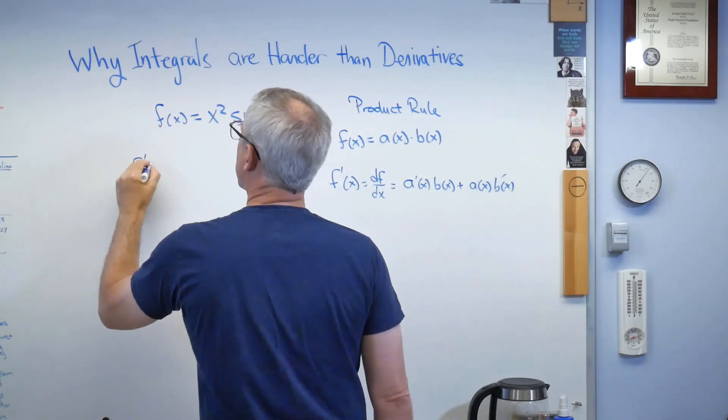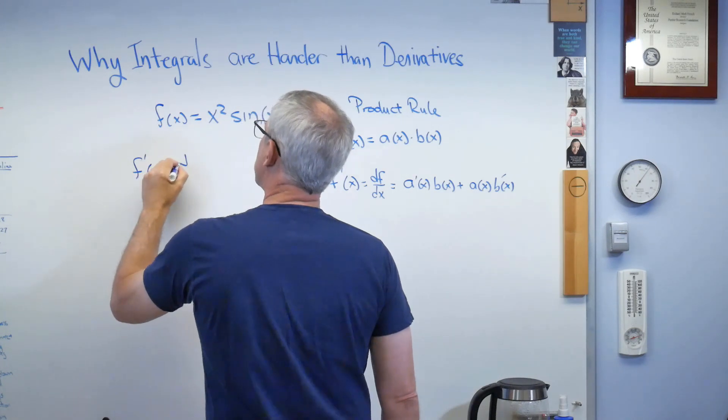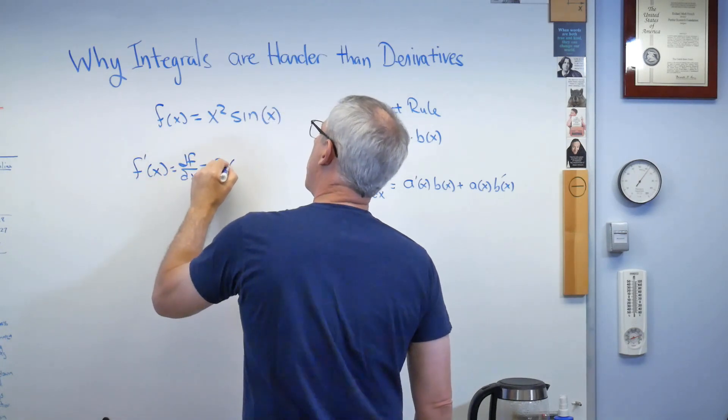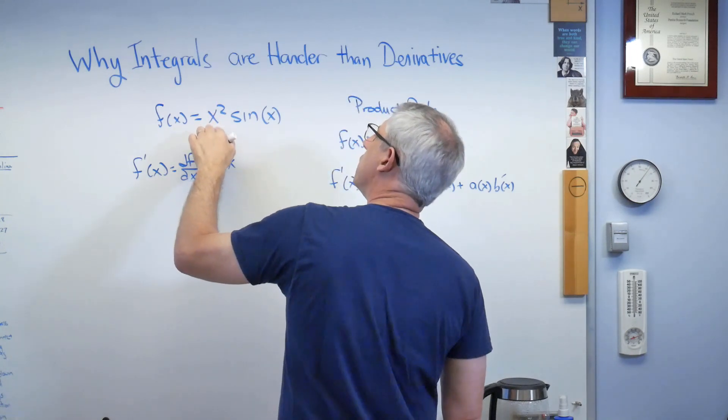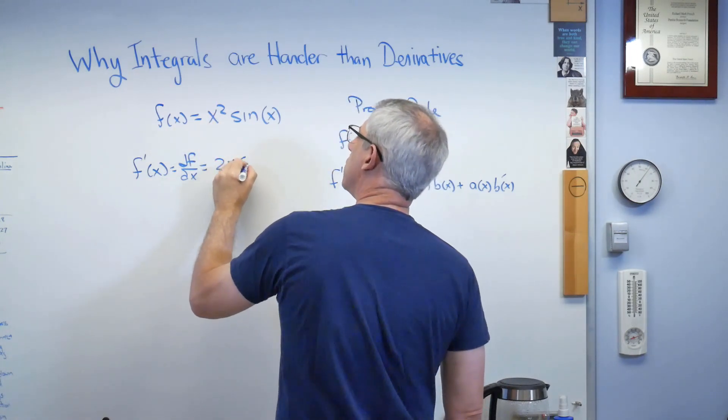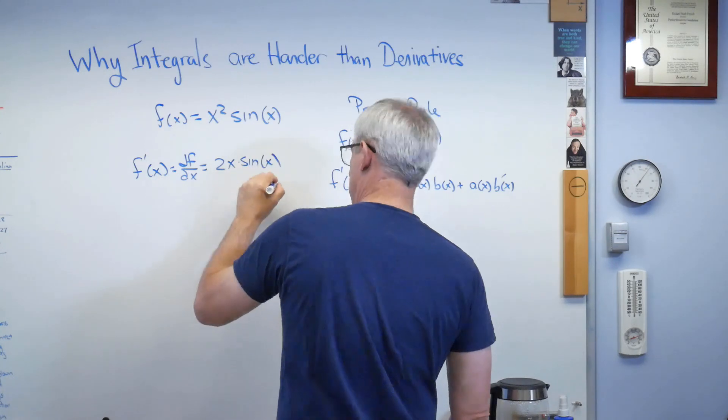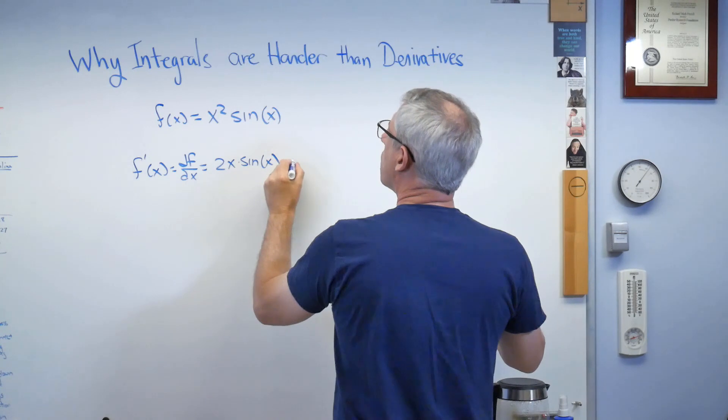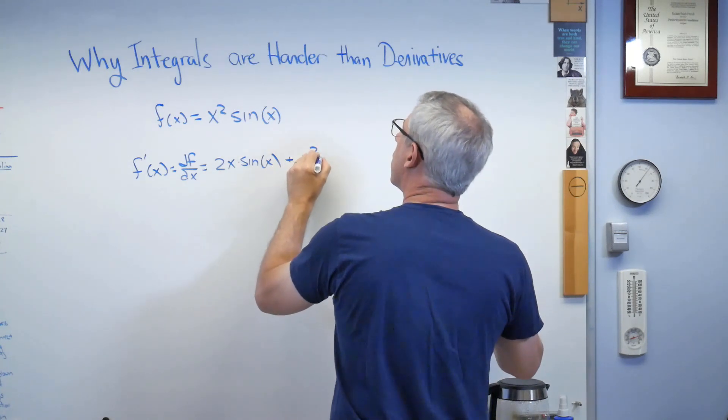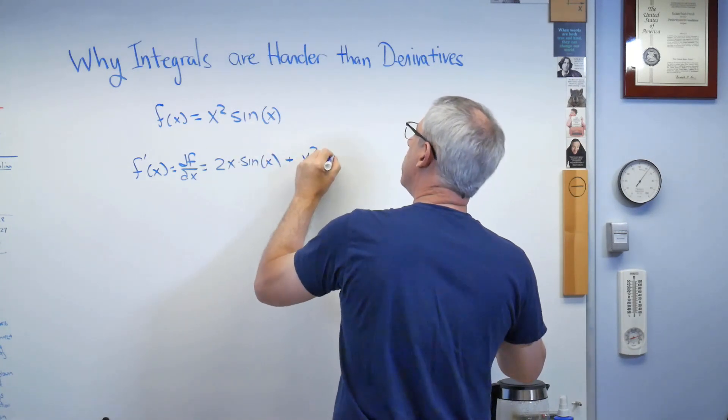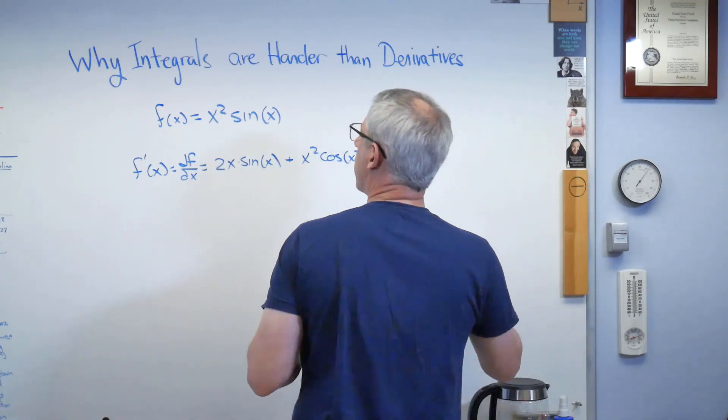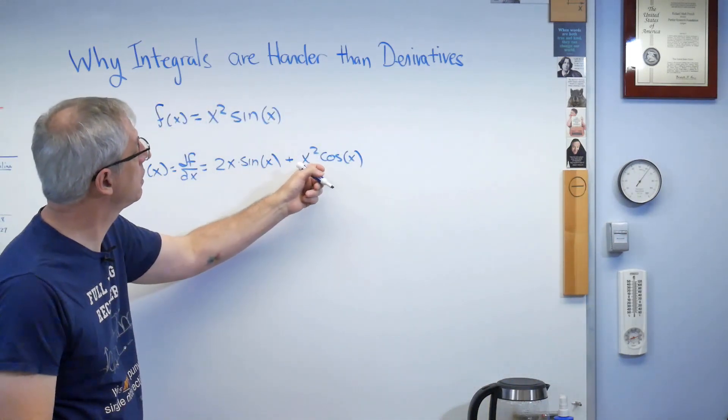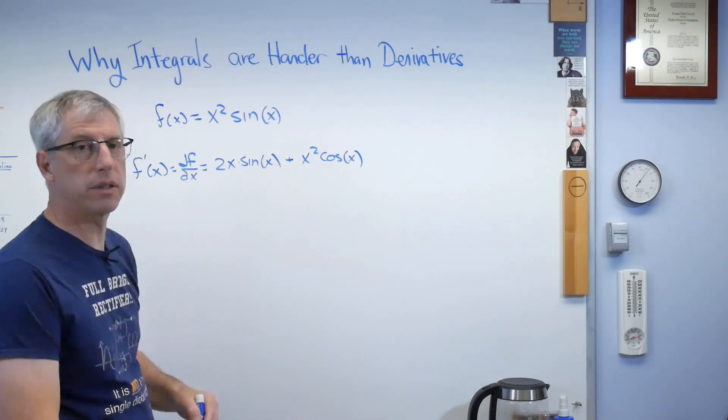So let's just do that. f prime of x, which is also equal df dx, is 2x, that's the derivative of x squared, times sine x, plus x squared, and the derivative of sine is cosine. Derivative of the first times the second plus the derivative of the second times the first. That's the product rule.